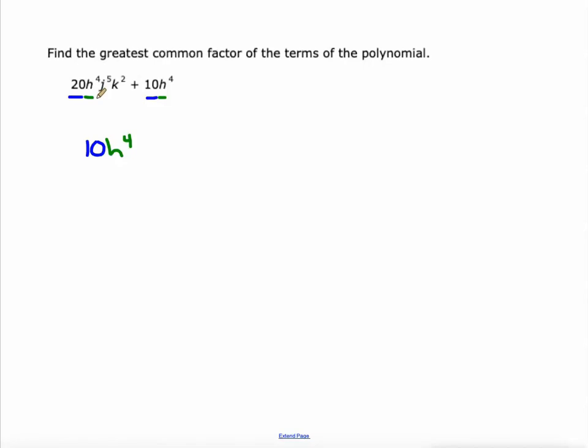As far as j to the 5th, there are no j's over here, or it's j to the 0. So I could write j to the 0 here, but that would just clutter things up a little bit. So I'm not going to do that.